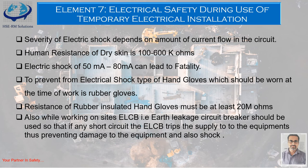The severity of electric shock depends upon the amount of current flowing in the circuit. Human resistance of dry skin is up to 10 to 600 kilo-ohms; sweating changes this resistance. Electric shock of 50 milliamperes to 80 milliamperes can lead to fatality. To prevent electric shock, rubber hand gloves must always be used, and they must have at least 20 mega-ohms of resistance. Also, while working on site, an ELCB — Earth Leakage Circuit Breaker — should be used so that in case of any short circuit, the ELCB trips and cuts supply, preventing damage to equipment and preventing shock.